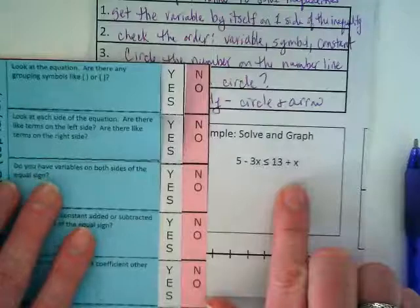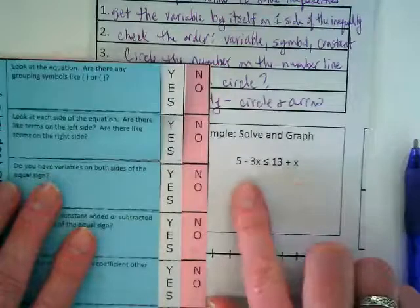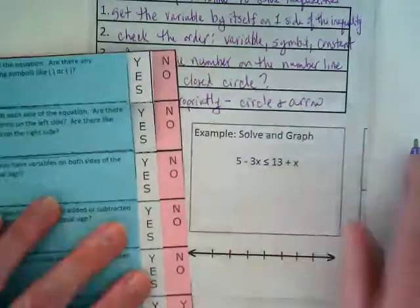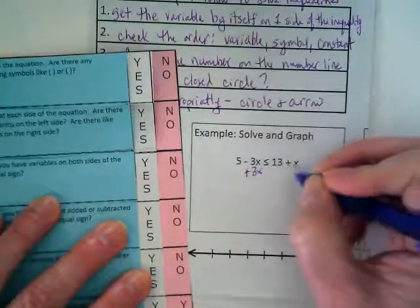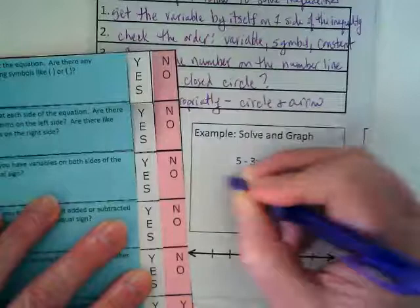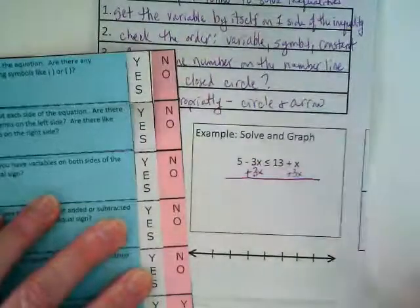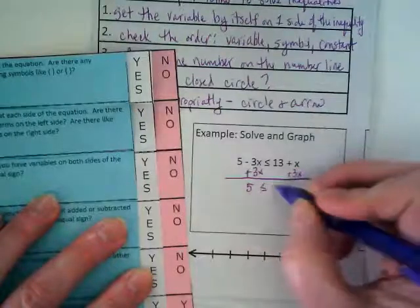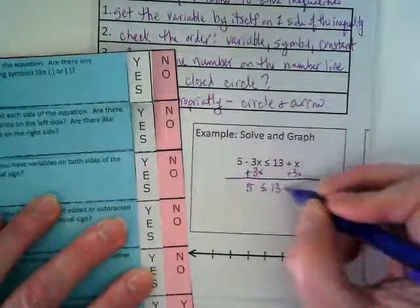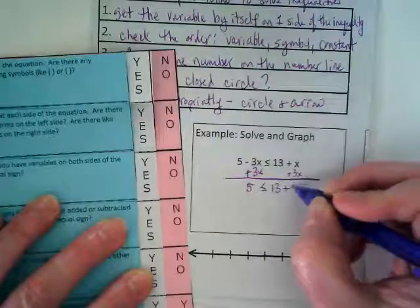Which of these has the smaller coefficient? x's coefficient is a positive what? -3x has the smaller coefficient, so we're going to add positive 3x to both sides. And we get 5 is less than or equal to 13 plus 4x.